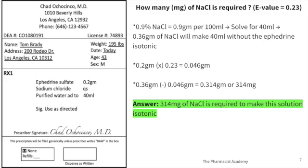Next, multiply the sodium chloride equivalent of ephedrine by the amount of ephedrine in the solution. In this case it's 0.2 grams multiplied by the E value of 0.23, giving 0.046 grams — that's how much sodium chloride tonicity the ephedrine is contributing. Now subtract: you need 0.36 grams of sodium chloride to make 40 mL isotonic, and the ephedrine sulfate is contributing 0.046 grams, so subtracting gives 0.314 grams, or 314 milligrams of sodium chloride required to make the solution isotonic.